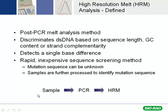Essentially, the way HRM — high-resolution melt — works is we start off with a sample, do the qPCR reaction in an instrument that permits the application of high-resolution melt. All of our CFX 96 and 384 full-well instruments are high-resolution melt compatible.